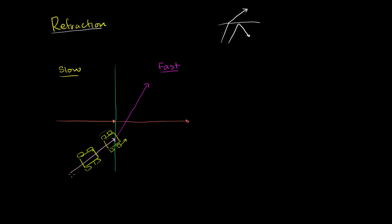The same thing would happen with a wave. If the P wave is approaching the boundary at an angle, something analogous to this is happening at the molecular level. This is the easiest way to think about in which direction it will refract, and hopefully it makes a little bit of intuitive sense.